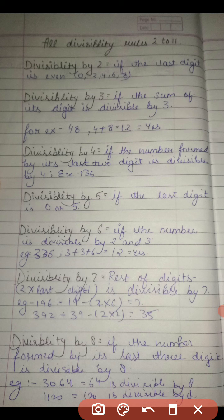Now, divisibility by 3. If the sum of the digit is divisible by 3. For an example, you can take 48. 4 plus 8 equals 12, and we know that on the table of 3, 12 comes.